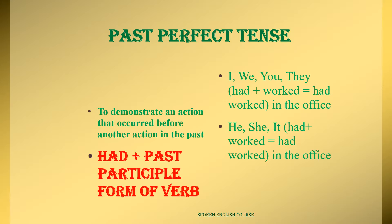In past perfect tense, for all subjects — I, we, you, they, he, she, it — we use had plus past participle form of the verb. In present tense, singular uses has and plural uses have, but in past tense, had is used for both singular and plural. So: I had worked in the office, we had worked in the office, she had worked in the office, he had worked in the office.